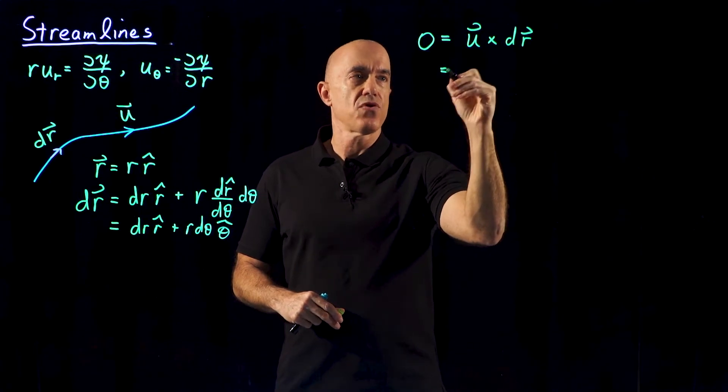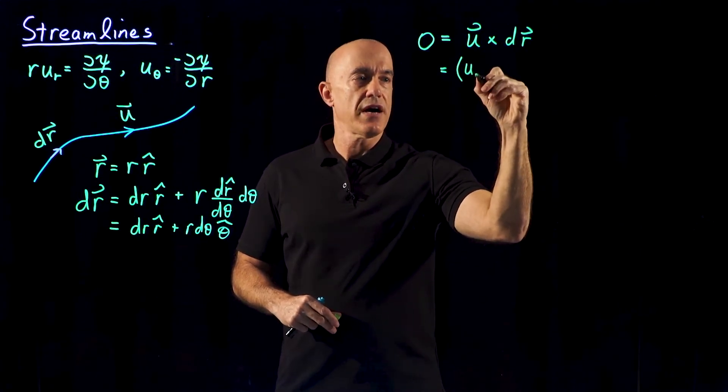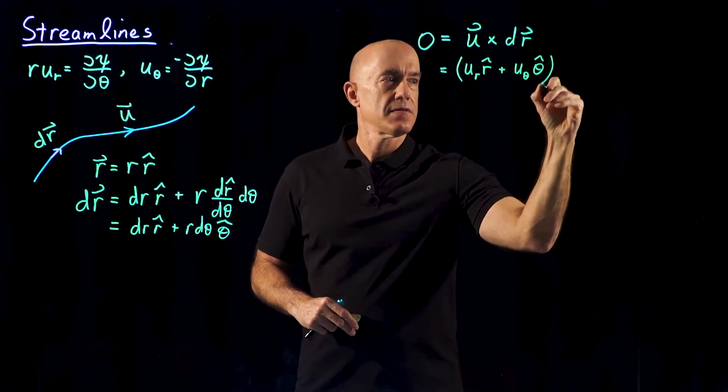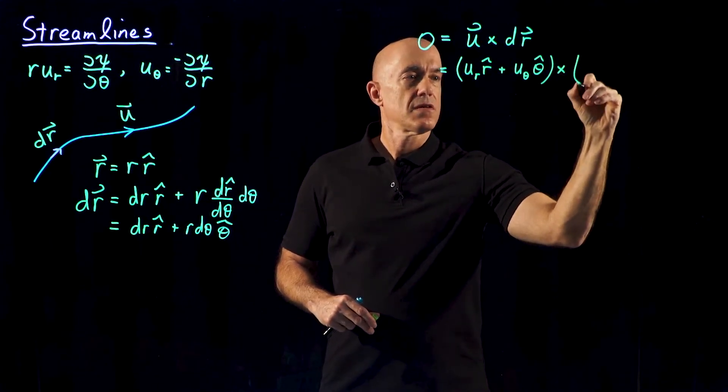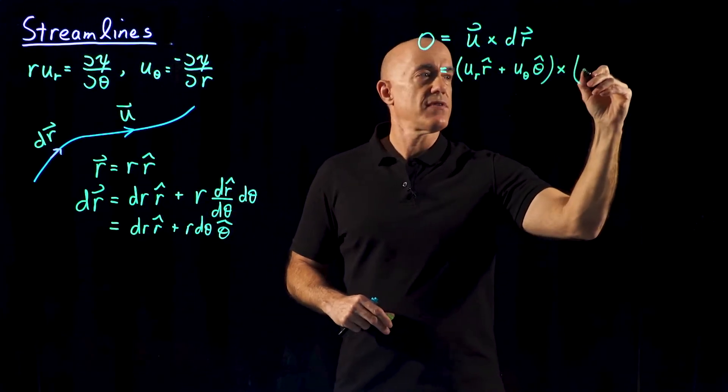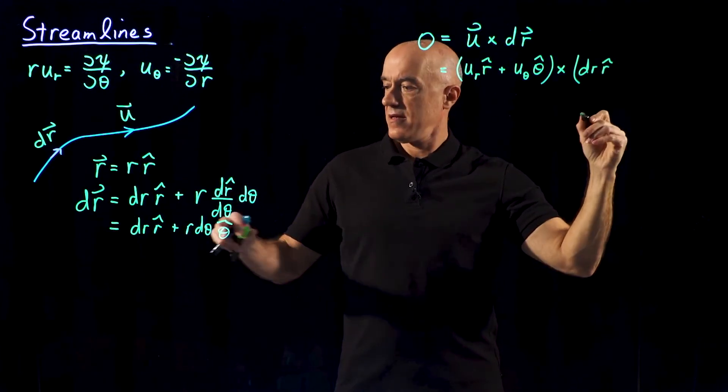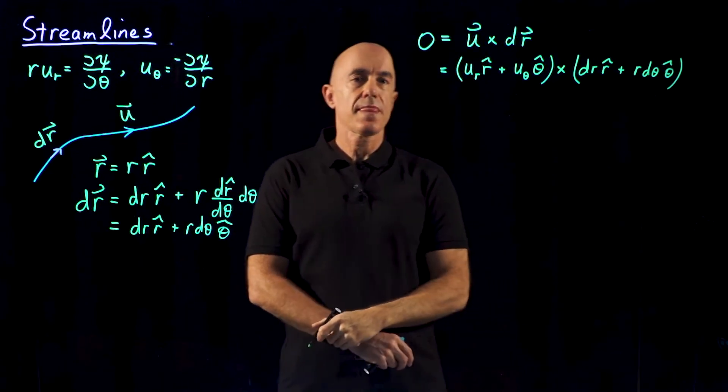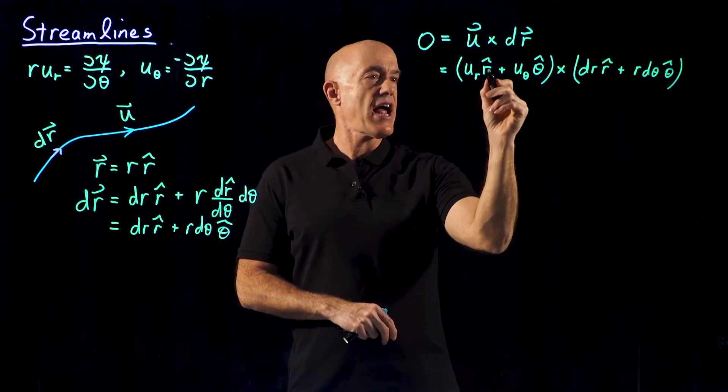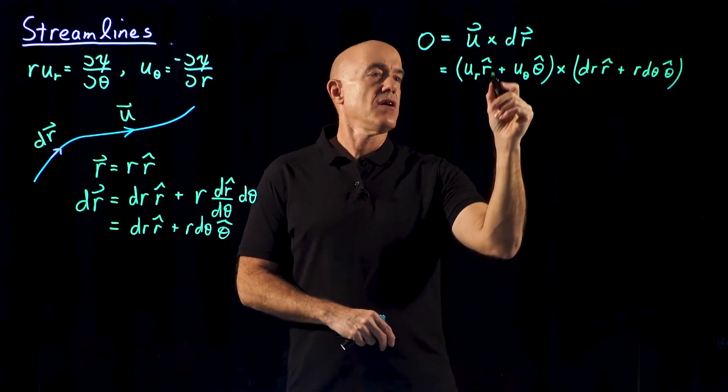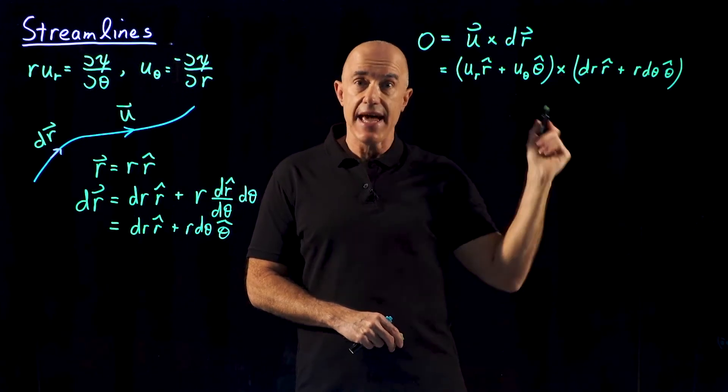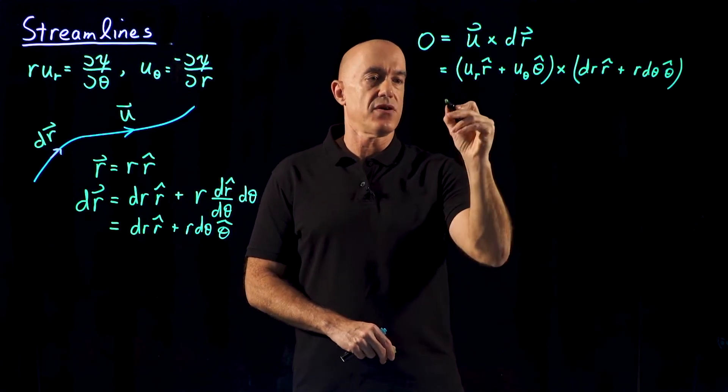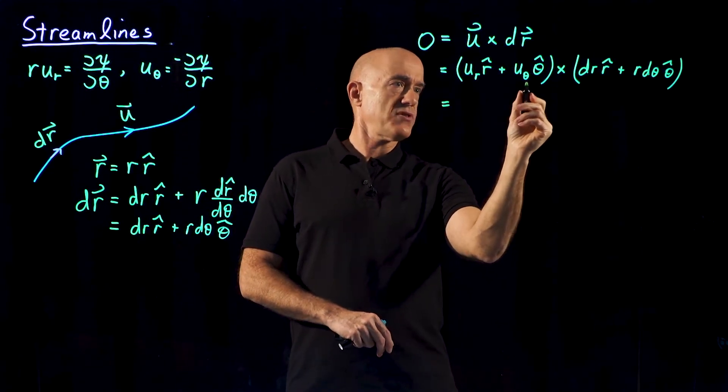And what is this in polar coordinates? So u is u_r r hat plus u_theta theta hat, and dr is what we just derived, so dr r hat plus r d theta theta hat. We can do this cross product because r hat cross r hat is 0, r hat cross theta hat is k, the unit vector in the z direction, and theta hat cross theta hat is 0. So we need just the cross terms here.